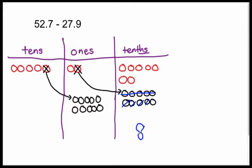I'm going to put an eight right here for eight tenths. Between the tenths and the ones place always goes the decimal point. Now I'm trying to subtract seven ones. Do I have seven or more ones? Yes, I do. That's five, six, seven. How many ones do I have remaining? Four ones. There are four ones left after I subtract seven ones. And lastly, I'm going to subtract two tens — one, two. How many tens remain? Two tens. Therefore, our difference or our answer to the subtraction problem is twenty-four and eight tenths.